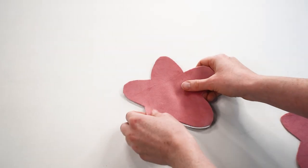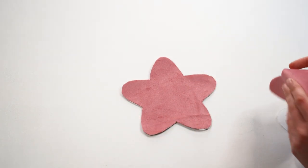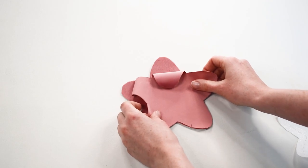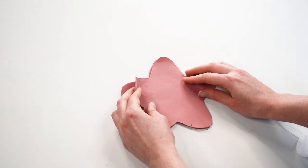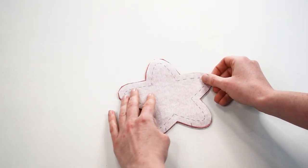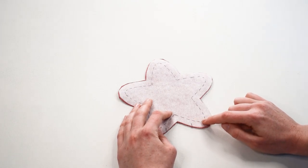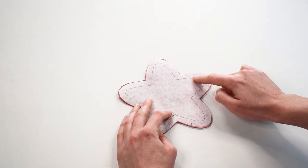The main star with the right side facing down, and then the interfacing with the glue side facing down. Pin these together and sew along the stitching line you traced.